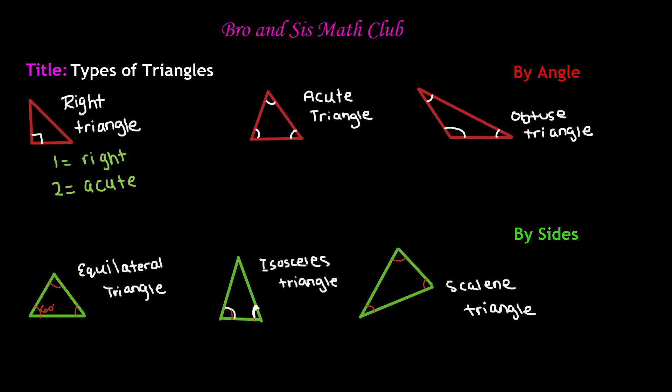Now the next triangle in this first category is the acute triangle. In an acute triangle, there are three angles which are all acute. So all of these angles are less than 90 degrees.